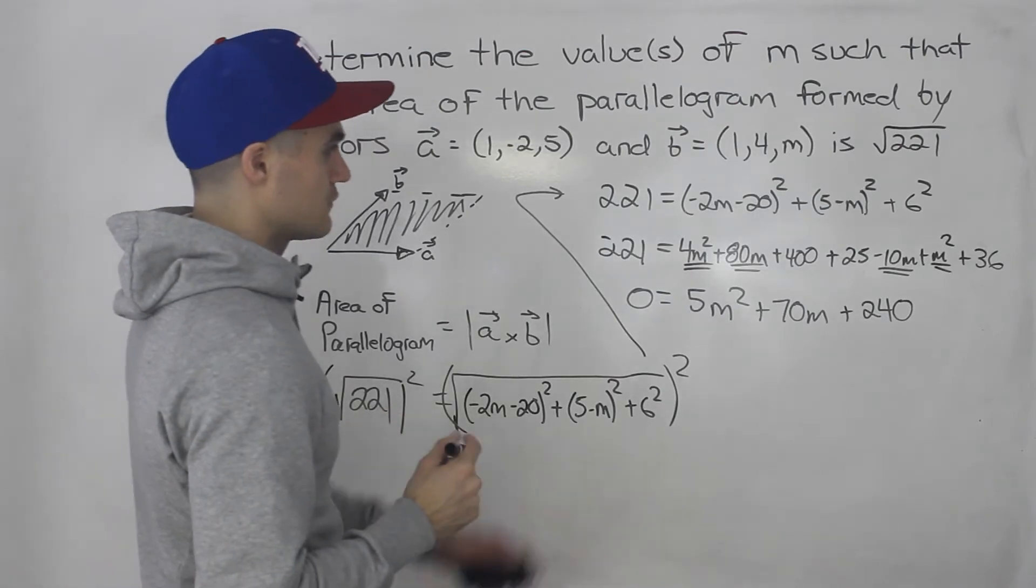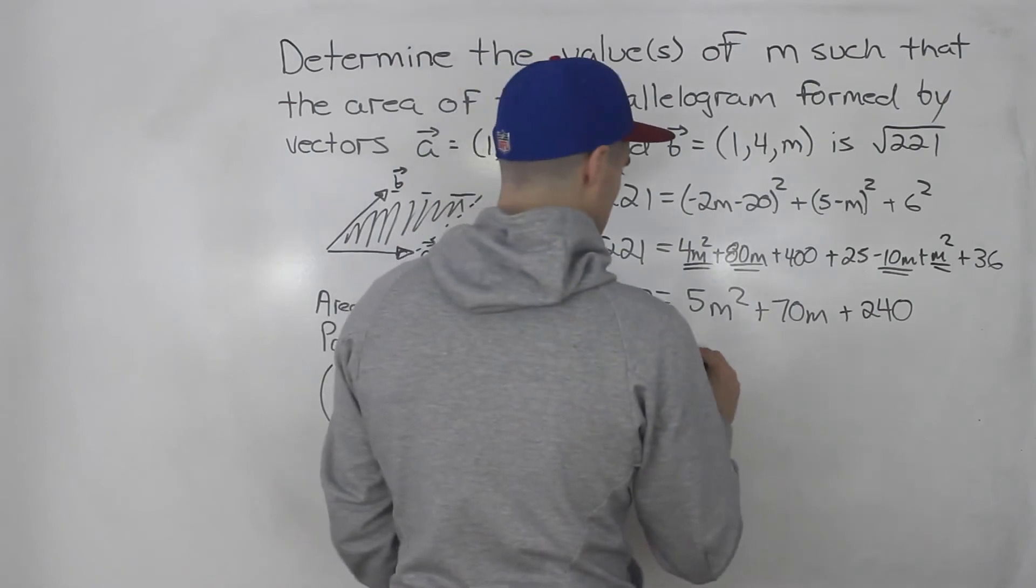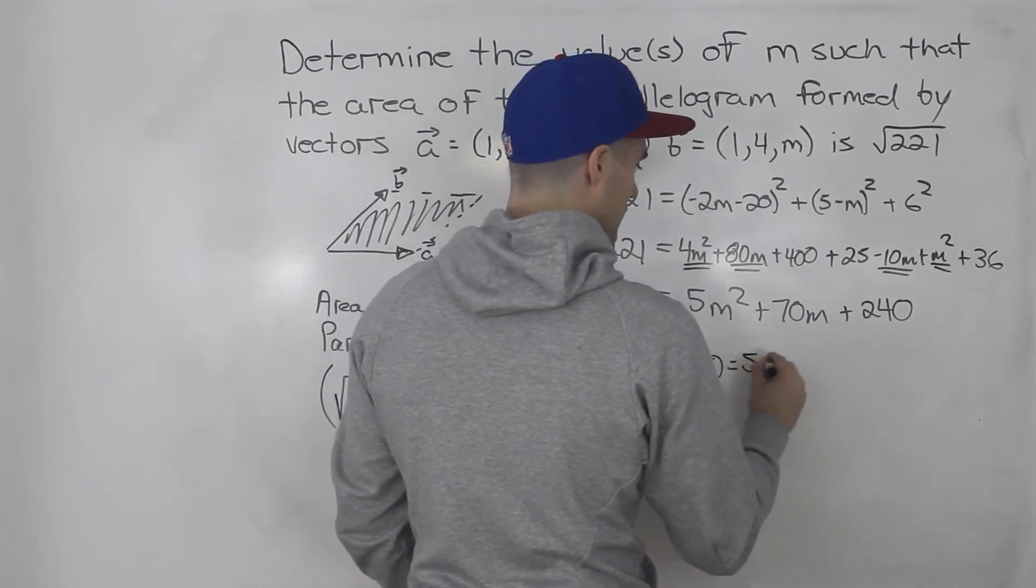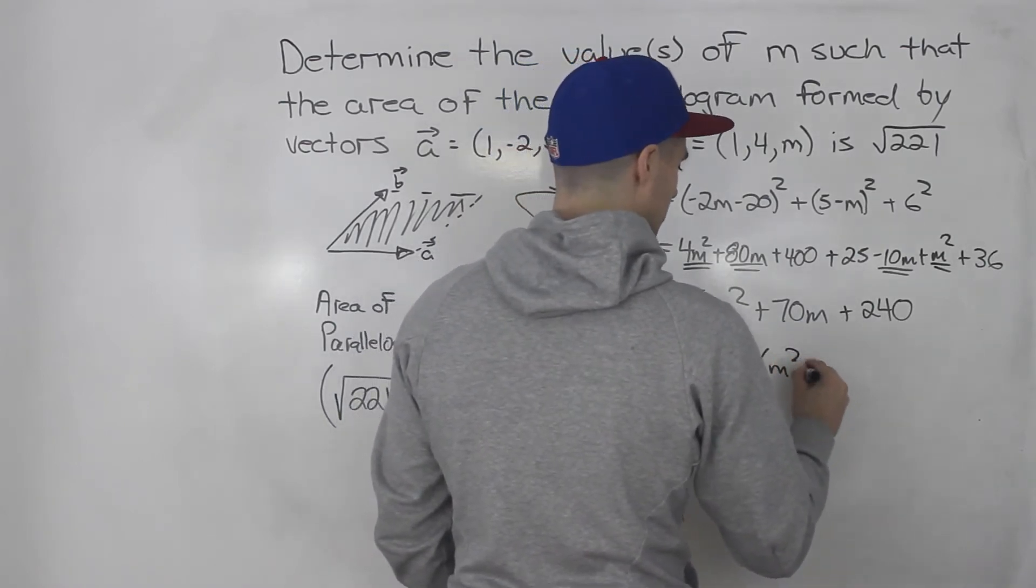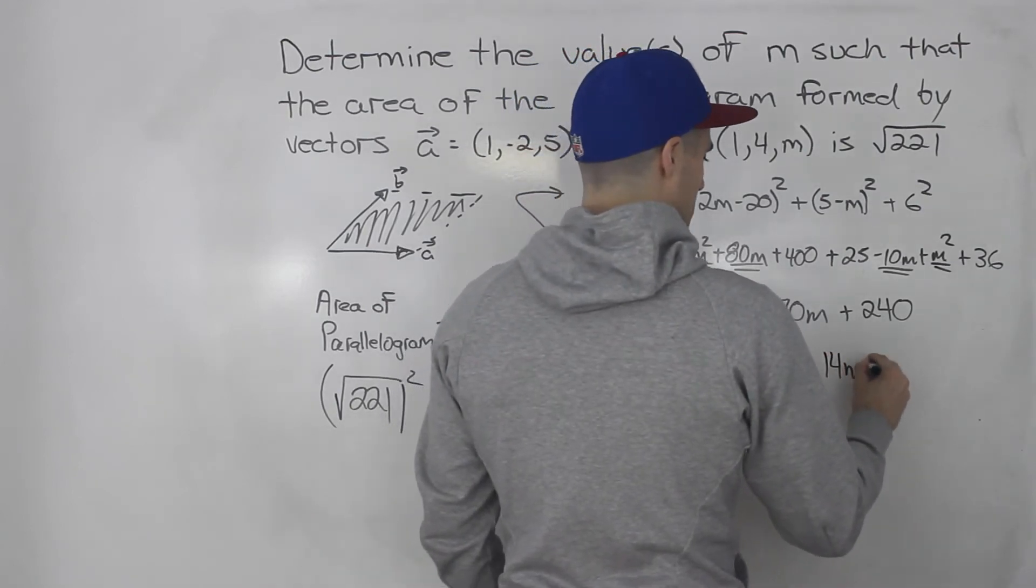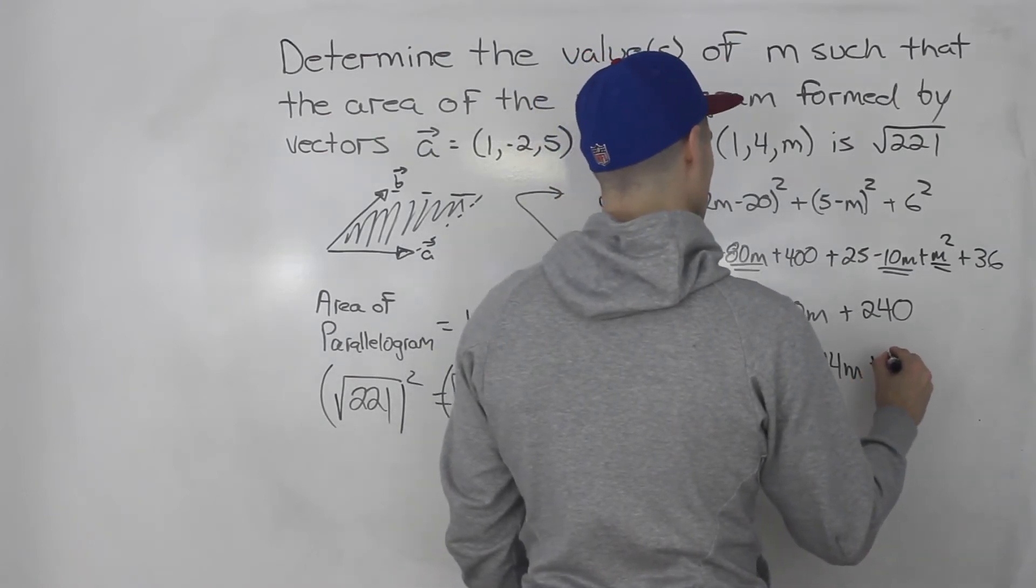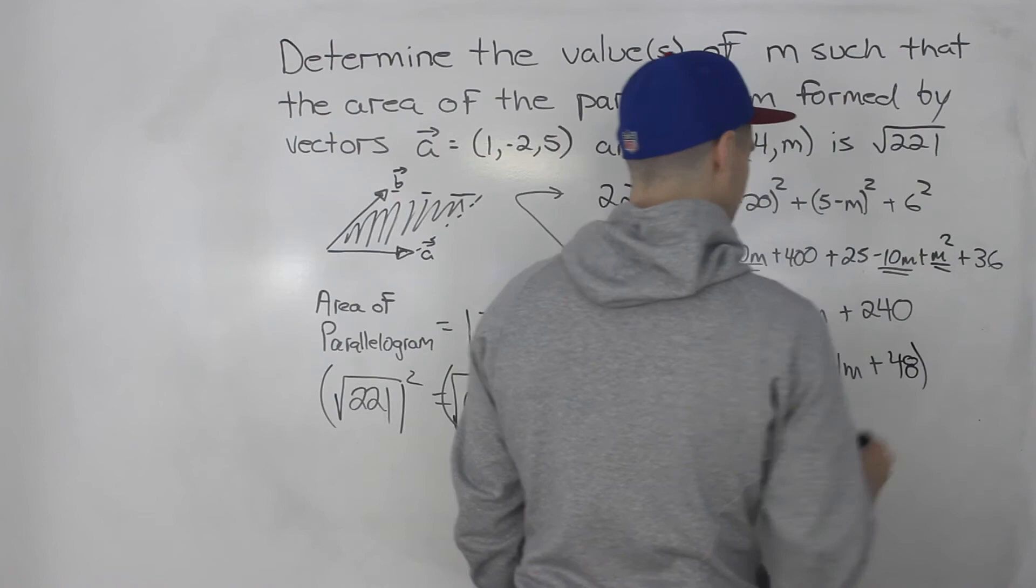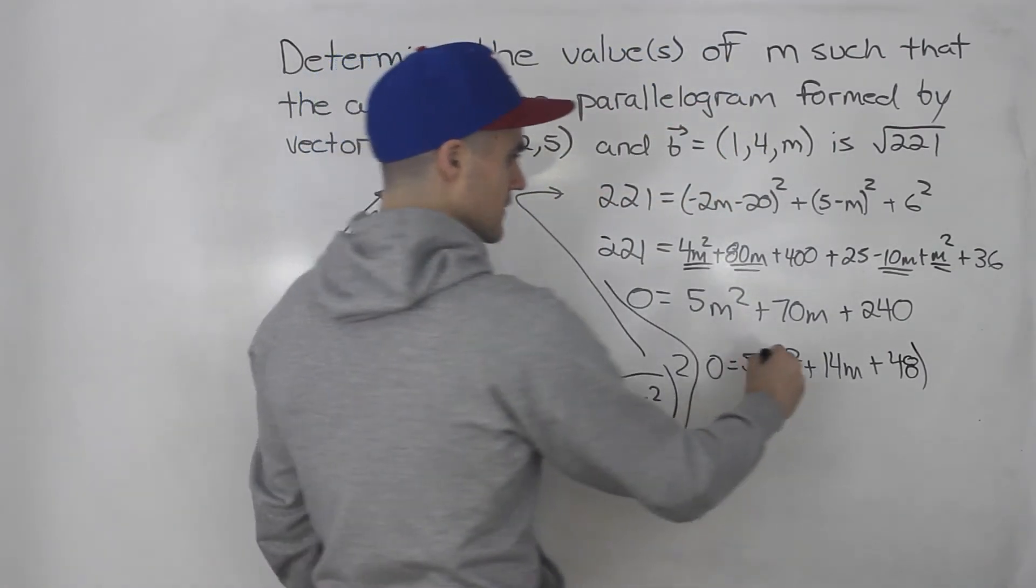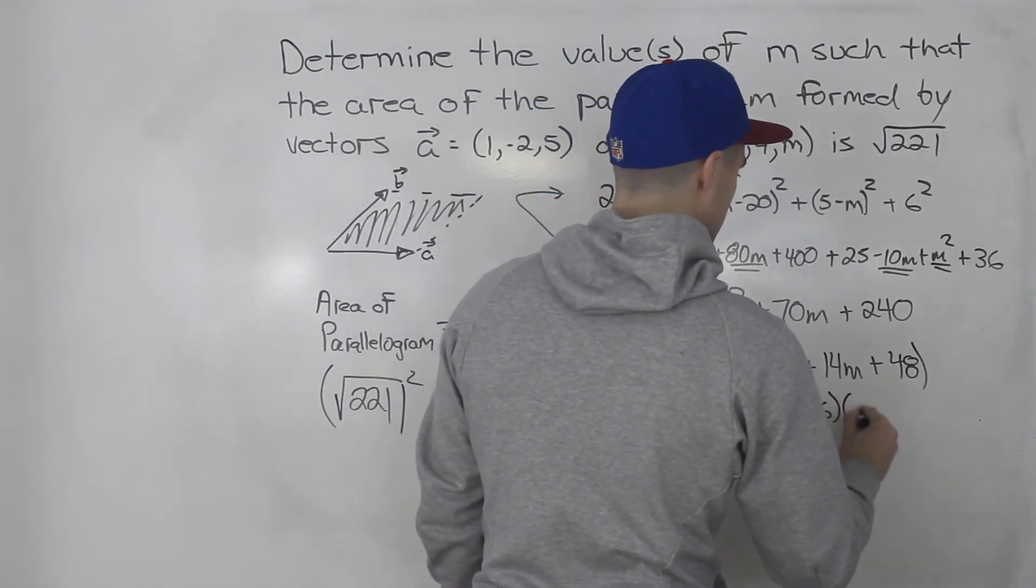I think this is actually going to factor smoothly. You could throw it in the quadratic equation right away if you want, but I'm going to continue. So 0 equals, you could take out a 5 from everything, so m squared plus 14m plus 240 divided by 5 would give you 48. And then this factors smoothly into m plus 6, m plus 8.